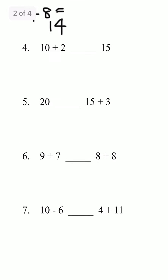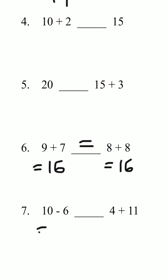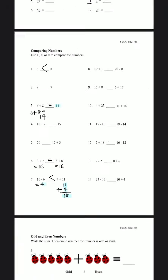We're going to try number 6. We have 9 plus 7 and 8 plus 8. 9 plus 7 is 16. 8 plus 8 is also 16, so here we put equal sign again. And then for number 7, we have 10 minus 6. 10 minus 6 is 4. 4 versus 11 plus 4, which is 15. So 15 is bigger, and we would put less than.